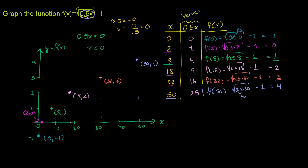Now we connect the dots to get the graph of the function. If I connect the dots, I get a curve that looks like half of a sideways parabola — and that's essentially what it is. The graph isn't just these sample points; for any x in the domain, which is x greater than or equal to 0, the function value sits on this curve.